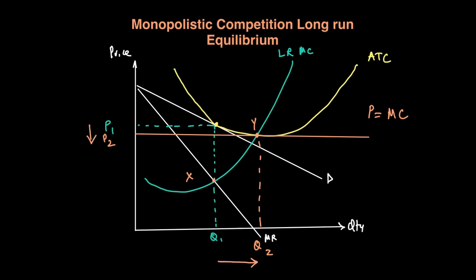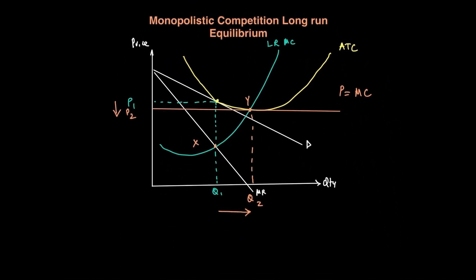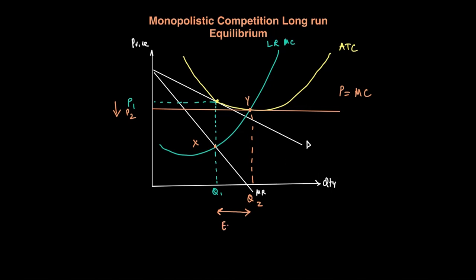Perfectly competitive firms are producing at full capacity — more than firms under monopolistic competition. Because the demand curve is downward sloping, monopolistic competition results in firms producing below capacity. This excess capacity can be shown by the distance Q1 minus Q2, which represents the amount by which monopolistic competition fails to produce at full capacity.